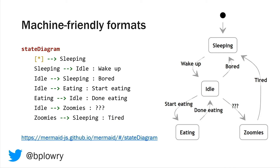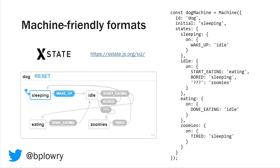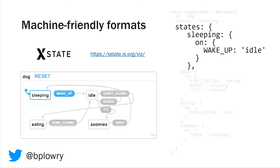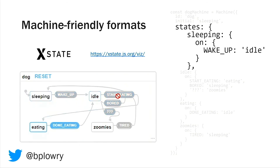One nice thing about graphs in general is we can represent them in ways that a computer can understand. This markdown on the left generated that diagram on the right. It's a language called Mermaid. If you use GitLab, it's kind of built into their markdown previews. If you use VS Code, you can get a plugin to do it. That means you can put this documentation in with your code so it all stays together and it's easier to keep in sync. Another example is using a library called xstate. You list out your states — in the sleeping state, on the wake-up event, I go to idle. And xstate has a little visualizer tool where you can click around and actually do things, which is nice for sharing and playing around.